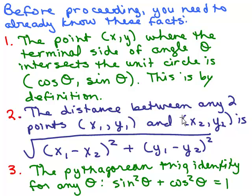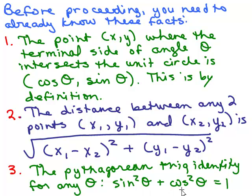The second thing we need to know is the distance formula between any two points. If you have two points X1, Y1 and X2, Y2, this is the distance formula. It doesn't matter the order you subtract because you're going to square that number. Finally, the Pythagorean trig identity: for any angle theta, sine squared theta plus cosine squared theta equals 1. Theta could be X plus Y, or 2M — if you square the sine of any angle and add the square of the cosine of that angle, it equals 1.